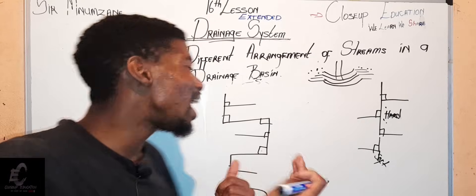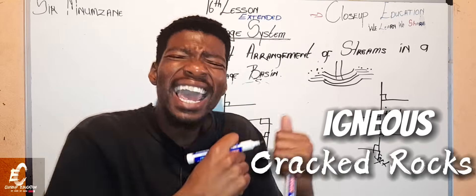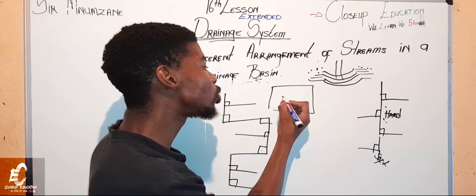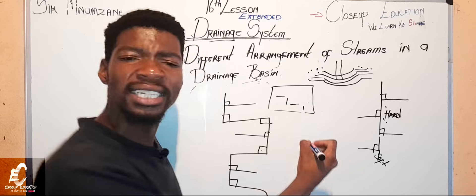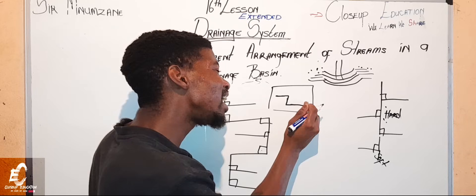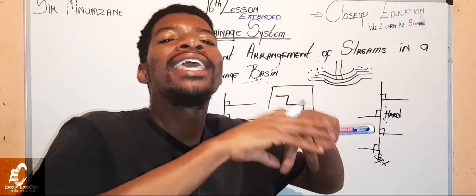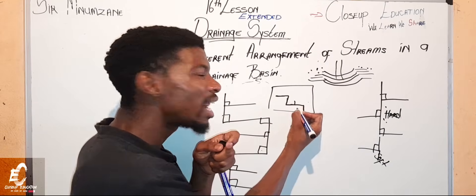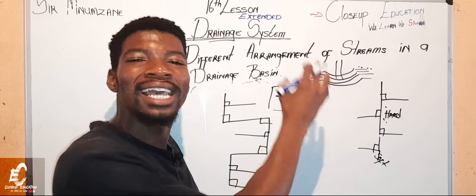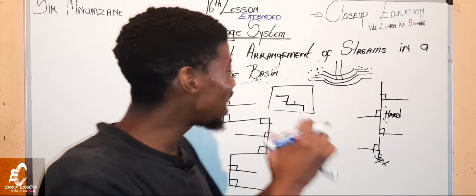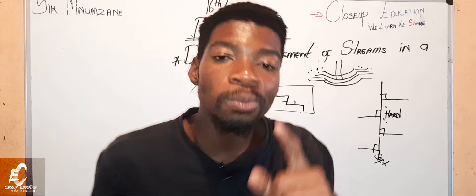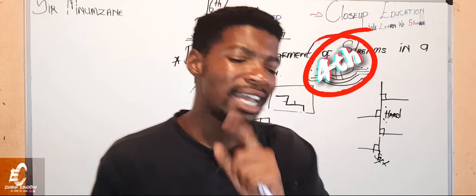The underlying rocks for the rectangular pattern are massive igneous rocks that are cracked. The surface is an igneous rock with cracks, and when there is precipitation, water is forced to extend and follow the cracked areas. The small cracks in the igneous rock create the right-angle streams joining the main river. So cracked igneous rocks are the underlying rocks in the rectangular pattern.